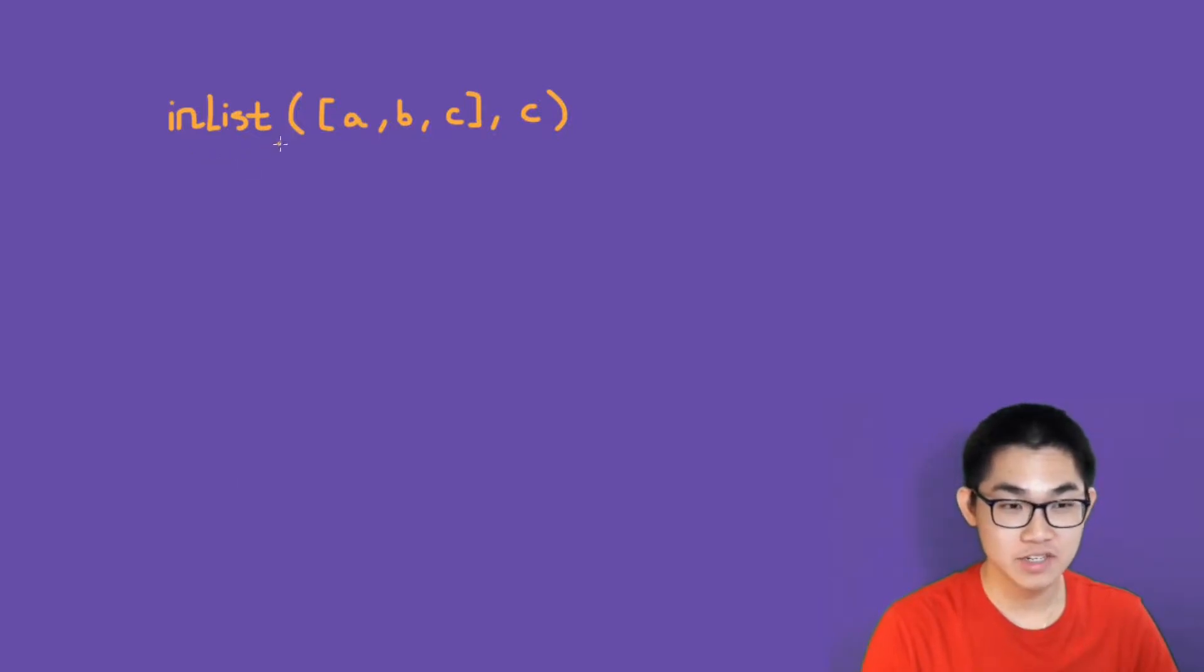So what this function is going to do is it's going to look at the first element at a, and you see that a is not c. So it's going to do the recursion. And basically what happens is that it just moves on to the next element, which is b. So we have b and c. And the same thing here. So it looks at the first element, and b is not c. So it's going to move on and recurse again.